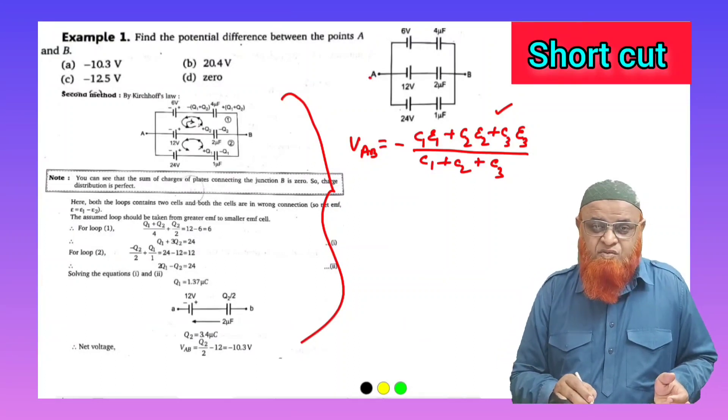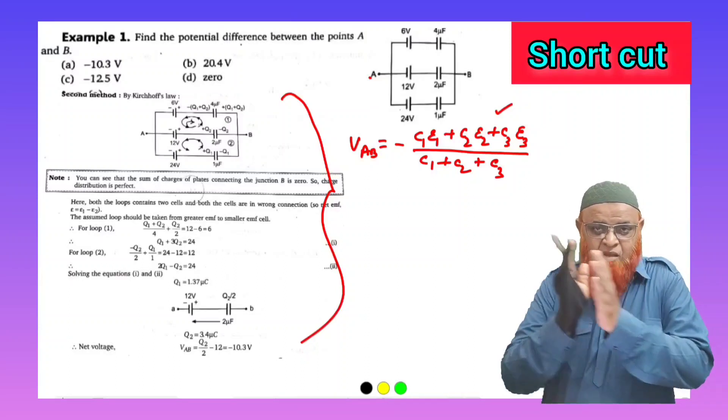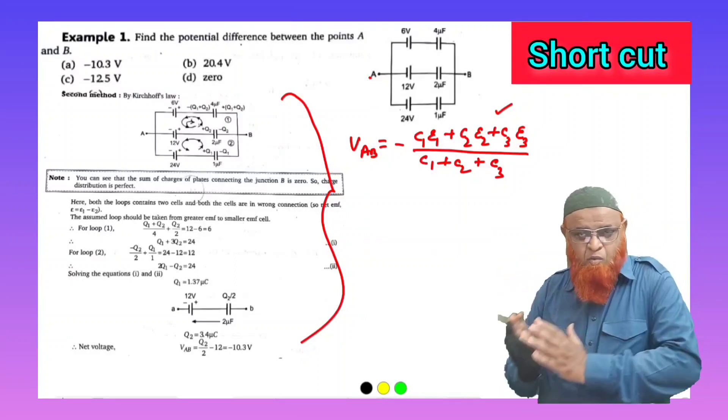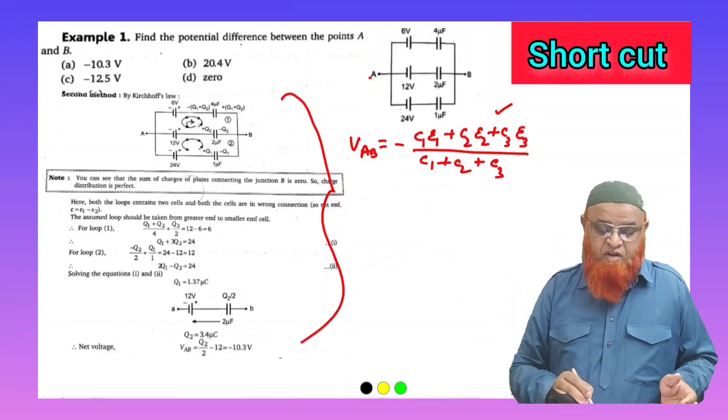He is asking us to find out the voltage across A-B, where there is one battery, one capacitor, one battery, one capacitor, one battery, one capacitor connected in parallel. He is asking us to find the potential difference.